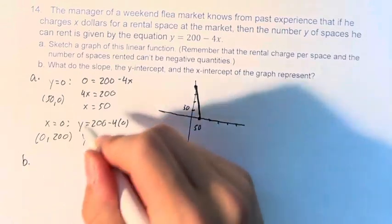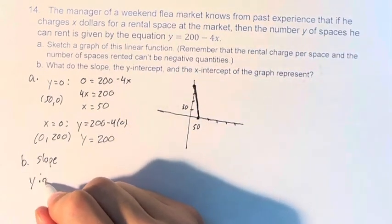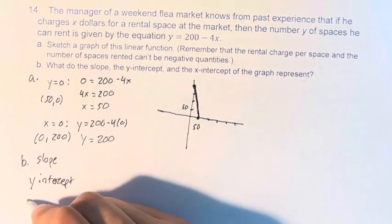This is A. In B, we're asked what do the slope, the y-intercept, and the x-intercept represent.